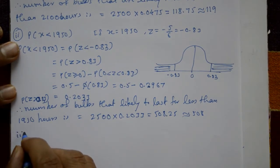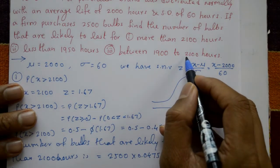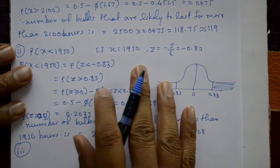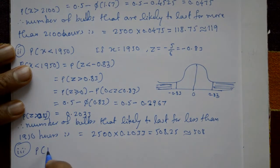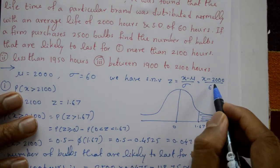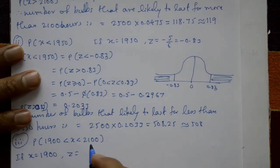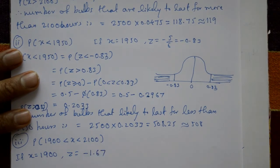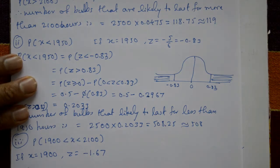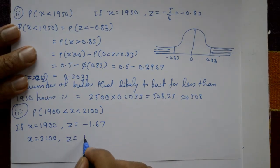Case 3: between 1900 to 2100 hours. Find probability of 1900 < x < 2100. Taking x = 1900, z = (1900 - 2000) / 60 = -1.67. Taking x = 2100, z = (2100 - 2000) / 60 = +1.67.